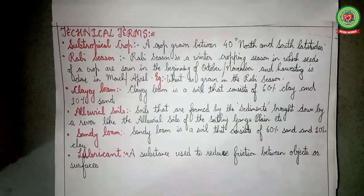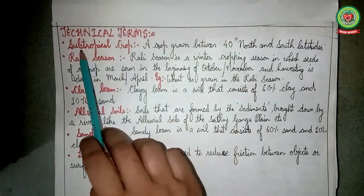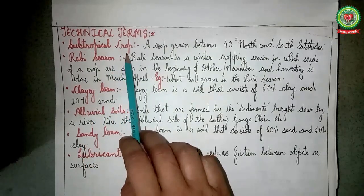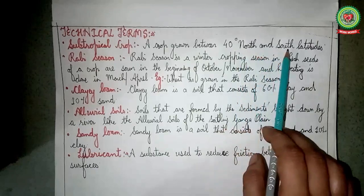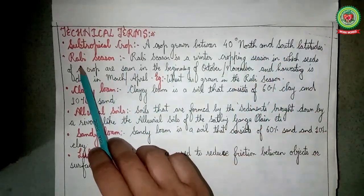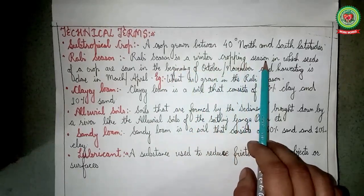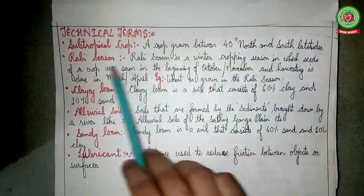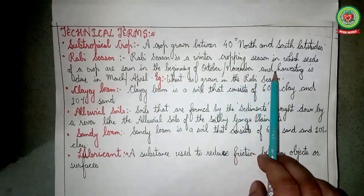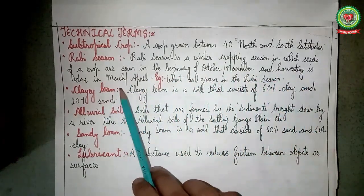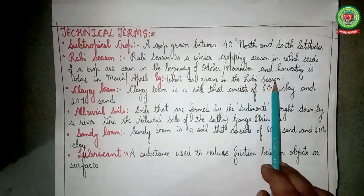Now let us go through various technical terms. Number one: subtropical crop — a crop grown between 40 degrees North and South latitudes. Number two: rabi season — a winter cropping season in which seeds are sown in the beginning of October or November and harvesting is done in March or April. For example, wheat is grown in the rabi season.